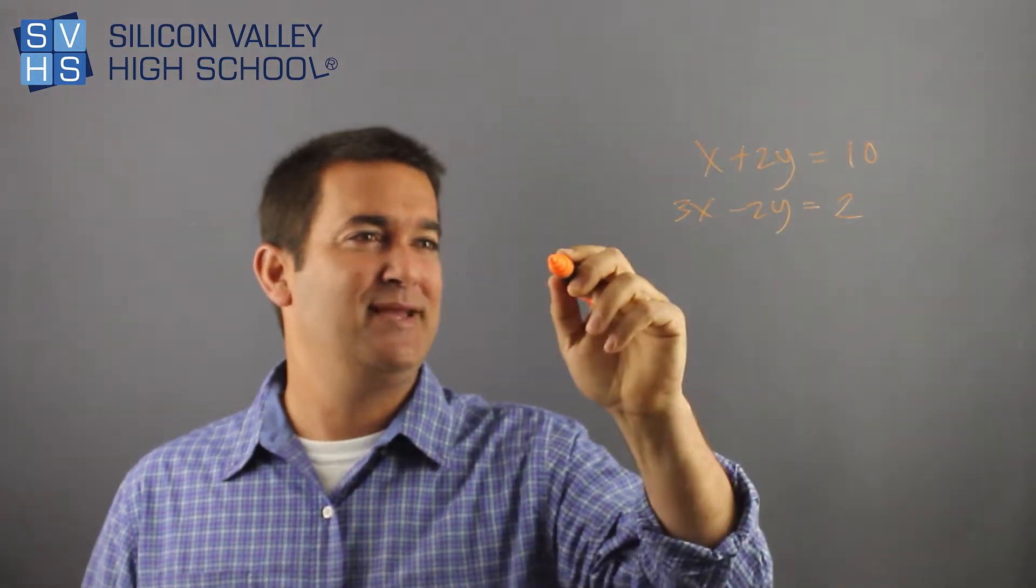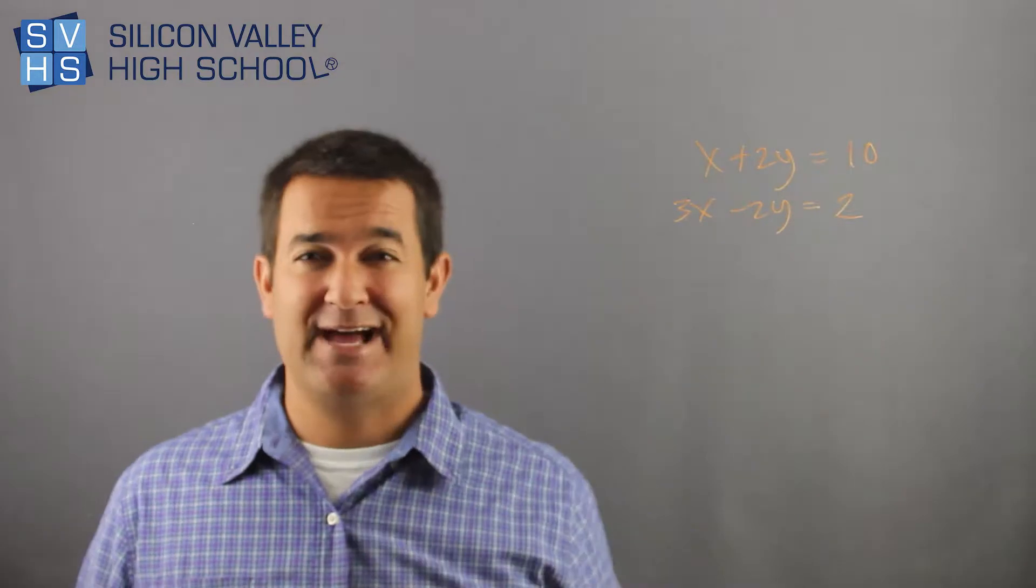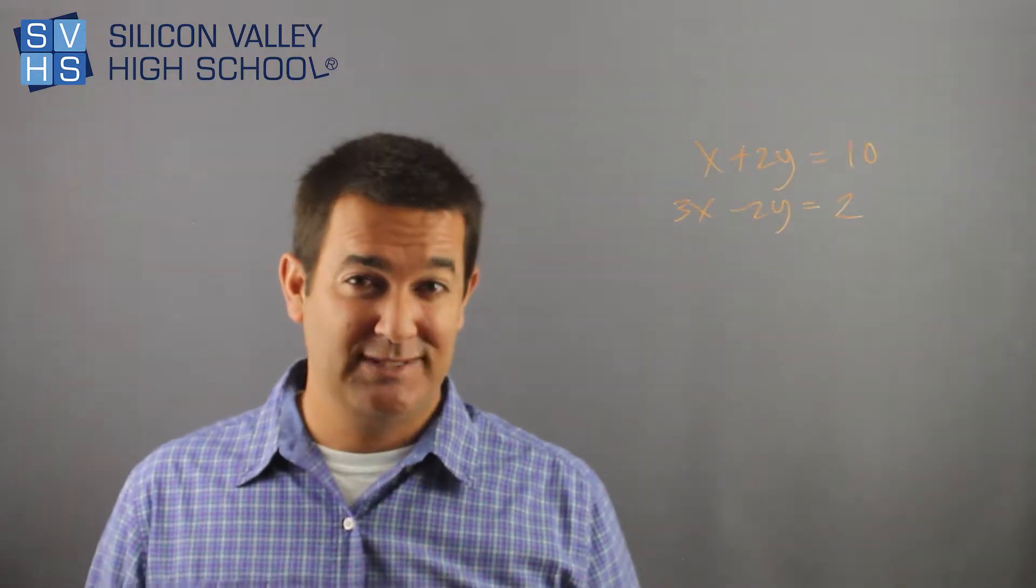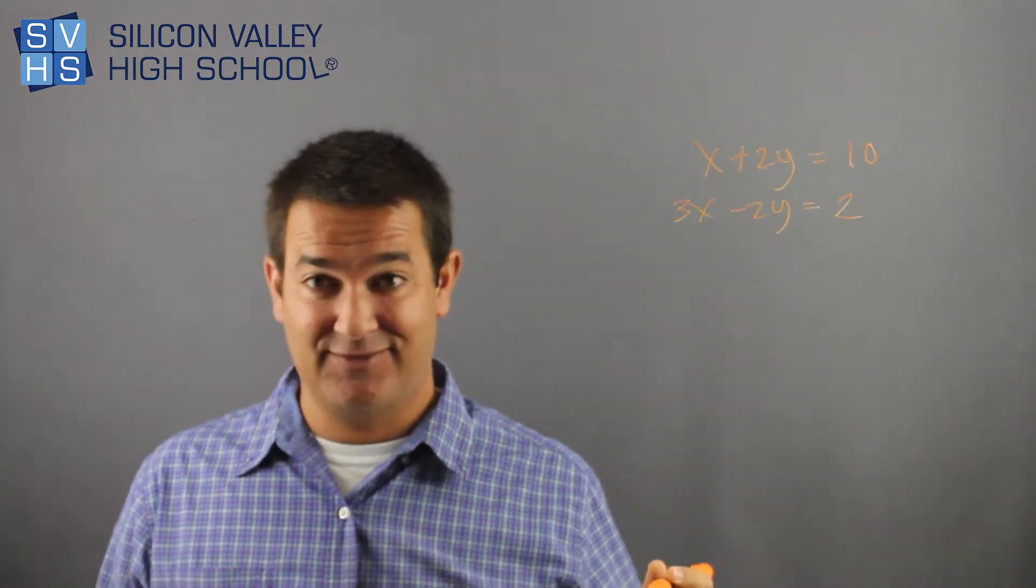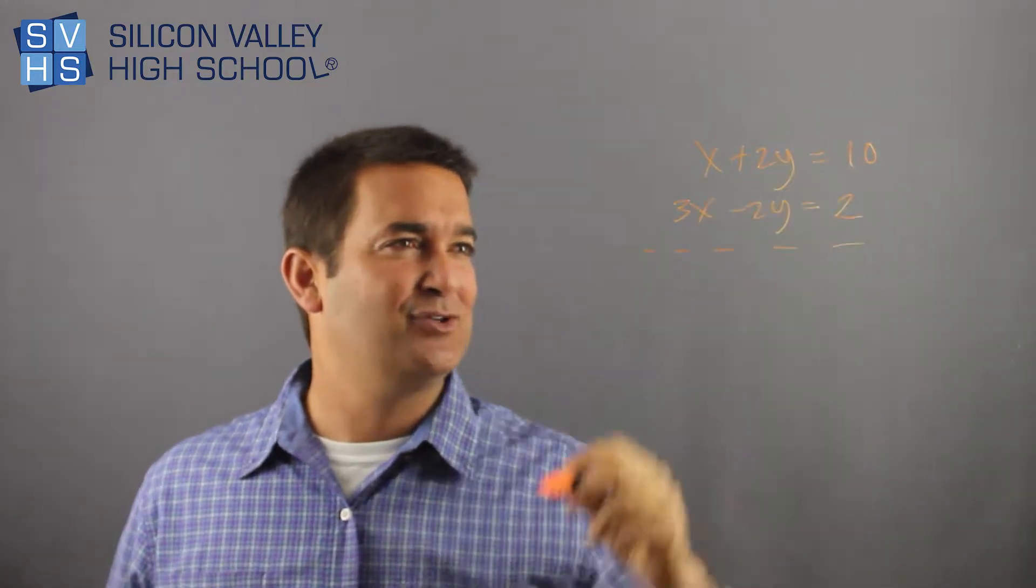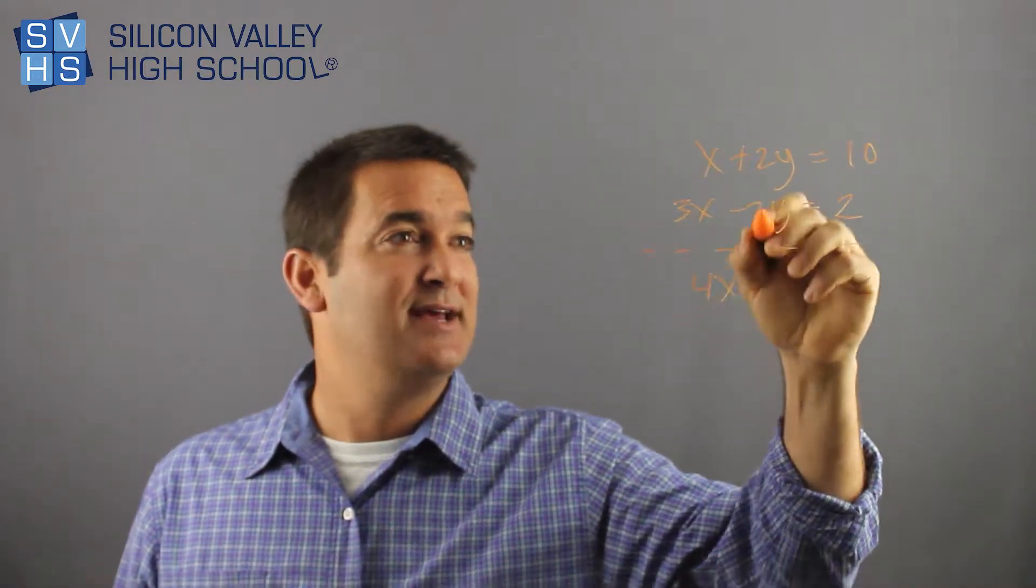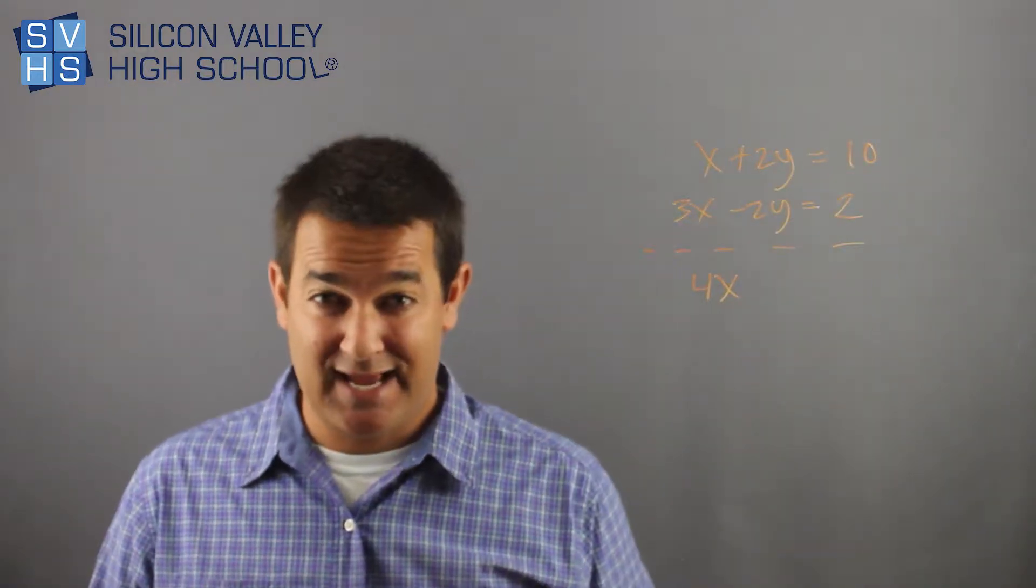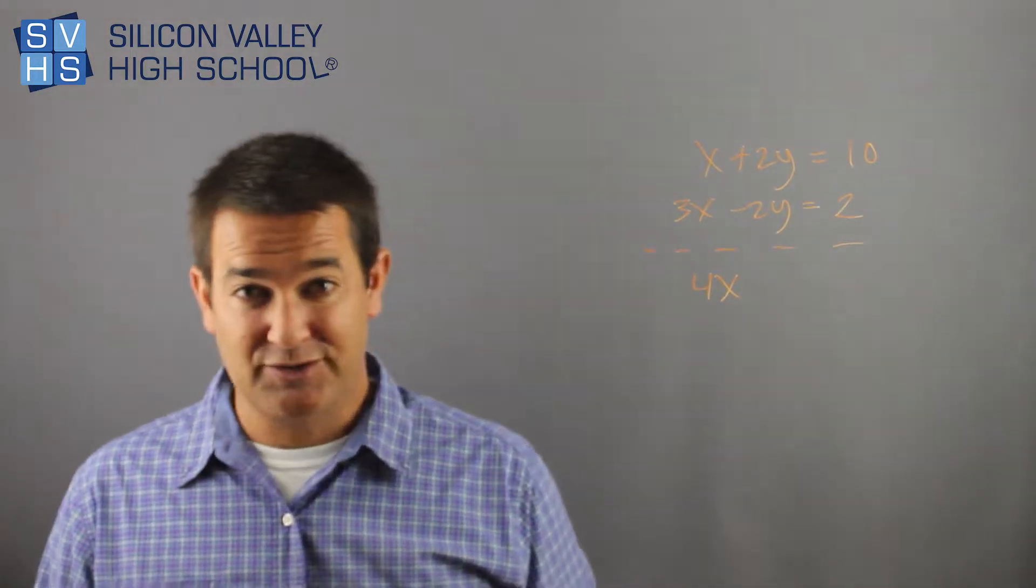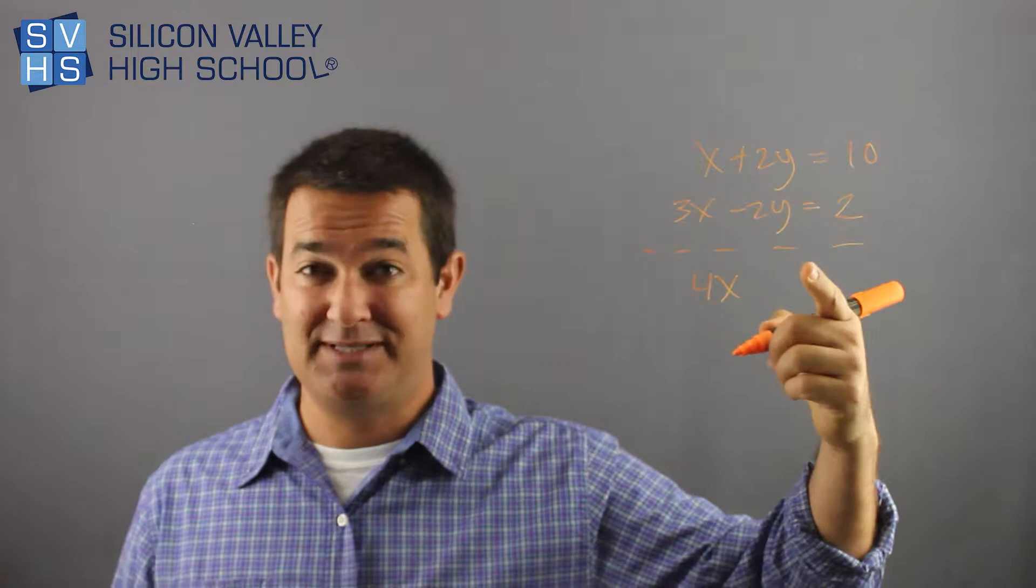What the addition method means is you basically add down. You add every single column down, and what happens is a variable will typically disappear if it is a good case for an addition method. Looking at this, you can kind of see if I add down, those y's are probably going to disappear, which is cool. What's x plus 3x? This is 4x. You have 2y plus negative 2y, like also known as 2y minus 2y. That's gone. I'm not even going to write it.